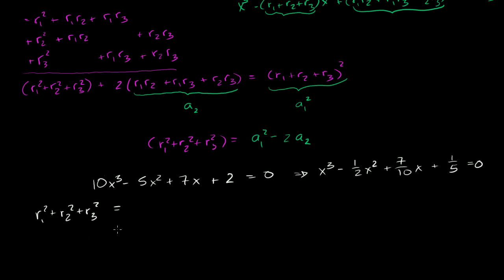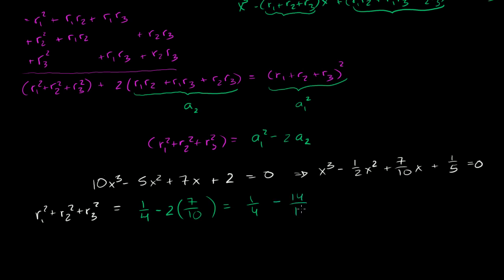Now apply the formula: S2 equals a1 squared minus 2a2. Here a1 is negative one-half, so a1 squared is one-fourth. Then minus 2 times 7 over 10 gives minus 14 over 10. Converting to a common denominator: 5 over 20 minus 28 over 20 equals negative 23 over 20.